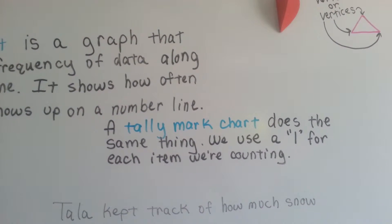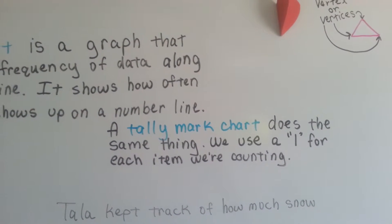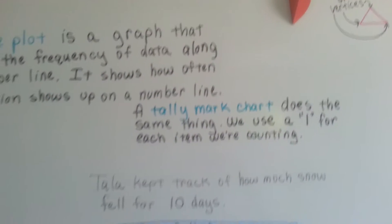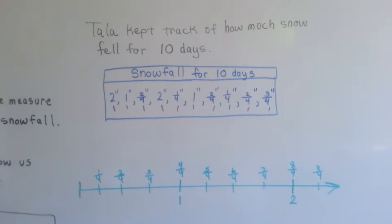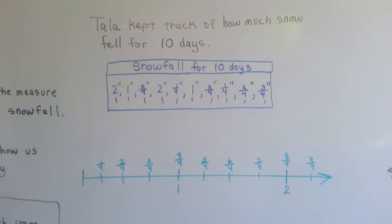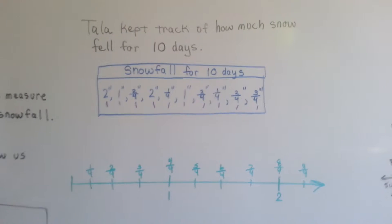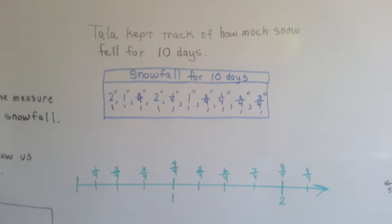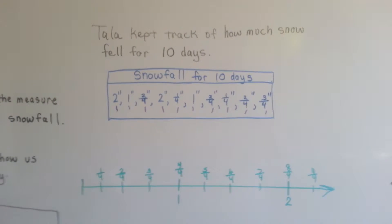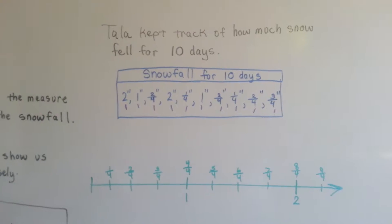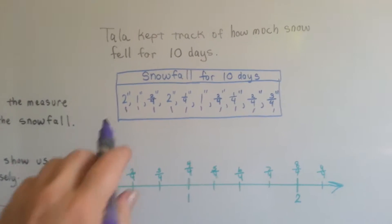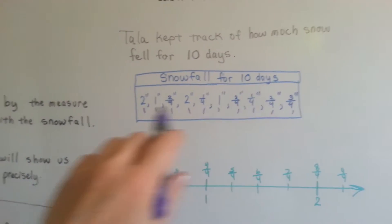We use a 1 for each item we're counting. So let's do a line plot real quick. Tala kept track of how much snow fell for 10 days, and these were her measures.